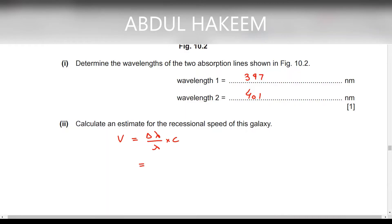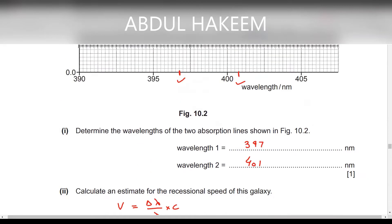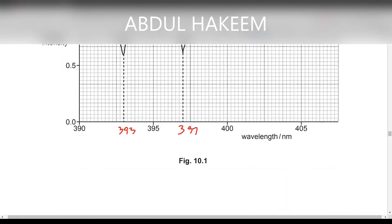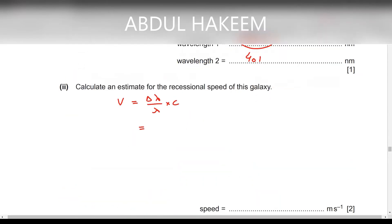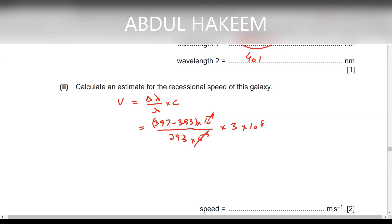What is the wavelength difference? Initially, in this diagram, the reference line is at 393 nm, and the shifted line is at 397 nm. So we take the difference: (397 − 393) divided by 393, multiplied by 3 × 10⁸ m/s. The 10⁻⁹ terms cancel, giving (4/393) × 3 × 10⁸, which comes to approximately 2.86 × 10⁶ m/s.